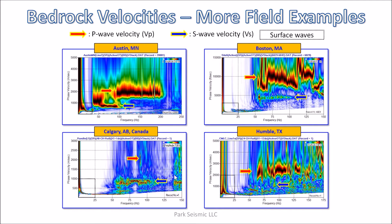Here are actual field record examples from four different places — three from the US and one from Canada. The first dispersion image shows well-developed BS and BP trends. The second shows a very sharply defined BS trend and a BP trend, although not quite horizontal. The third shows another sharply defined BS trend and a very narrow-banded BP trend. The fourth shows a BP trend and a very narrow-banded BS trend. All four images show BP trends occurring at phase velocities approximately 2.5 times those for BS trends.